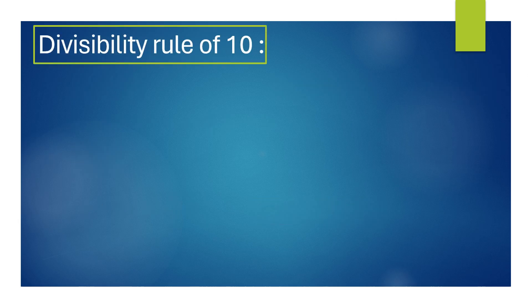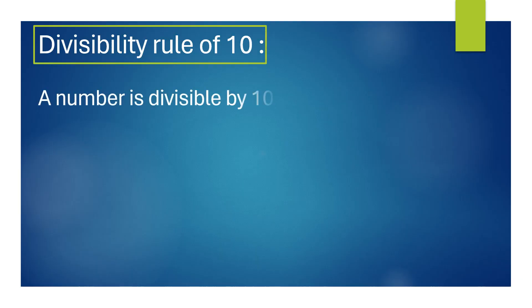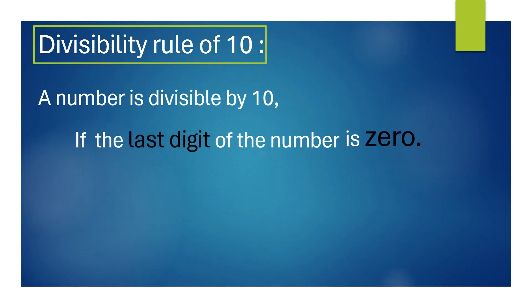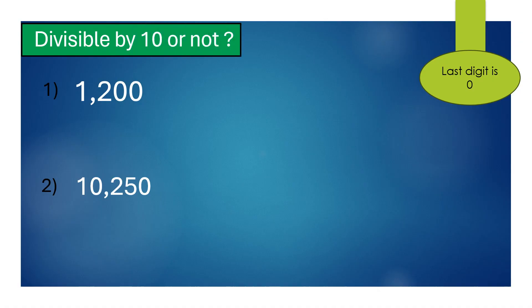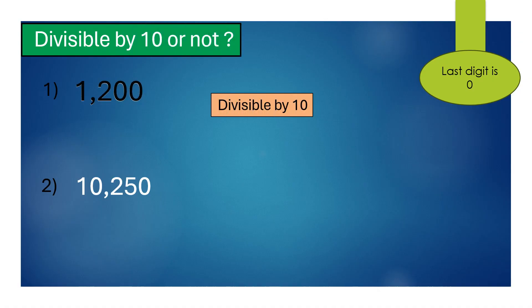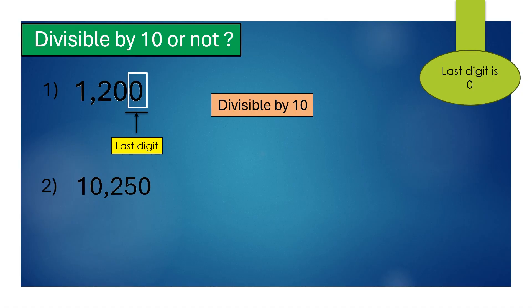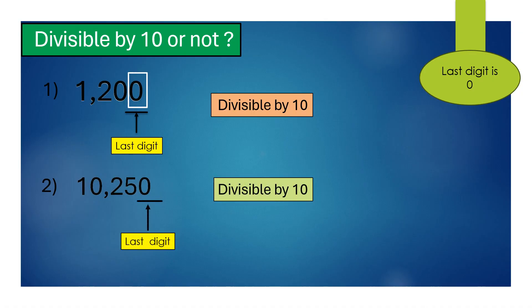Divisibility rule of 10: a number is divisible by 10 if the last digit of the number is 0. For example, 1,200 is divisible by 10 as its last digit is 0. Similarly, 10,250 is divisible by 10 as its last digit is also 0.